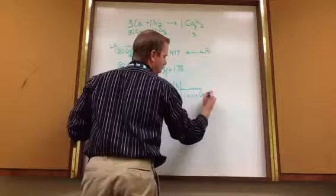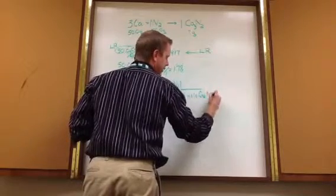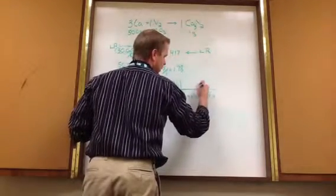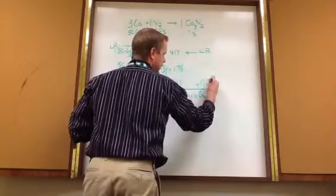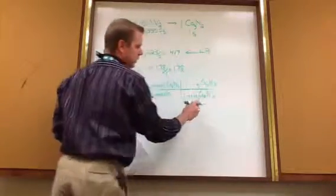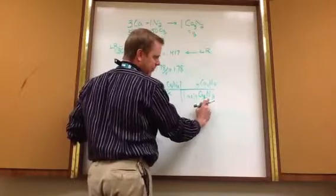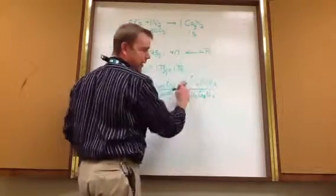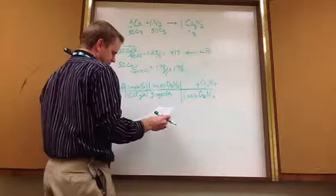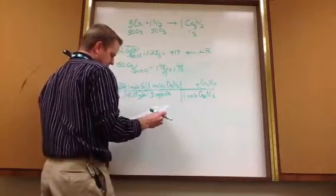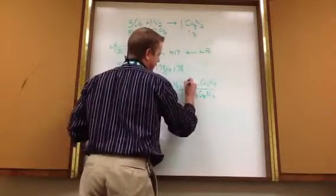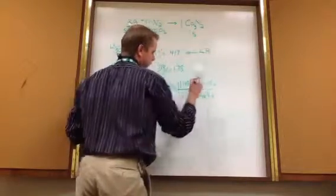Well, in one mole of Ca3N2, there is a certain number of grams in Ca3N2. You take 40.08 times 3, 14.01 times 2, and you put it right here. So, when you do the math on that, which I've already done, the answer is 148.26.